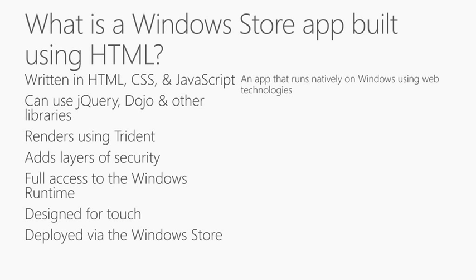You have full access to the Windows Runtime, and that's important because most HTML and JavaScript developers don't get that opportunity. If you're building for the web you use standardized communication methods to talk to the device, or you might build using something like PhoneGap or Apache Cordova where you package up HTML and JavaScript — but those platforms only have about 80-90% coverage of the whole API. With HTML and JavaScript on Windows 8, we implemented it so you have full coverage. Every API available to C# developers is available to you as a JavaScript developer.